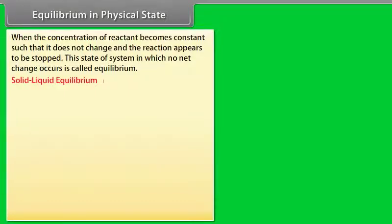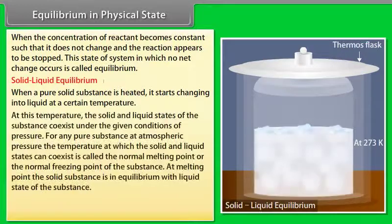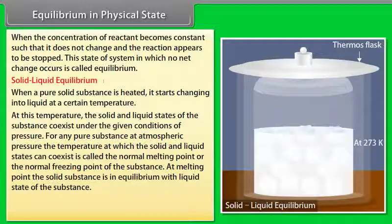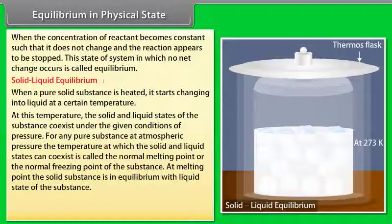Solid-Liquid Equilibrium. When a pure solid substance is heated, it starts changing into liquid at a certain temperature. At this temperature, the solid and liquid states of the substance coexist under the given conditions of pressure. For any pure substance at atmospheric pressure, the temperature at which the solid and liquid states can coexist is called the normal melting point or normal freezing point of the substance.